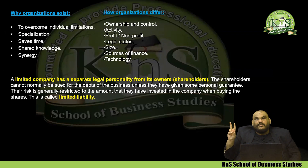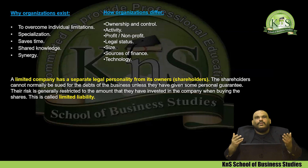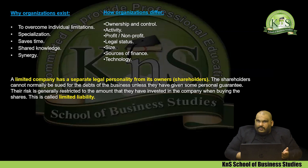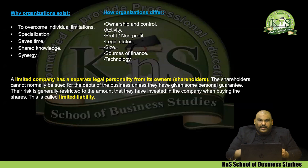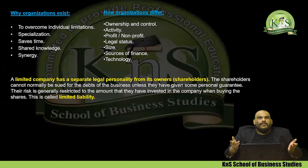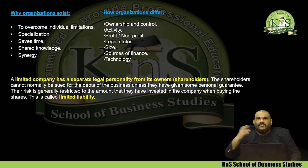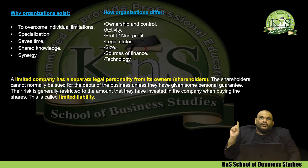The second type is the partnership — two or more people who come together and start a business together. For example, me and three friends pool our resources, our money, and our expertise together and start up the business. We then allocate profit shares — say I get 20%, my friends get 25% each — all set out in a partnership agreement.